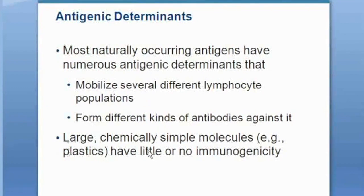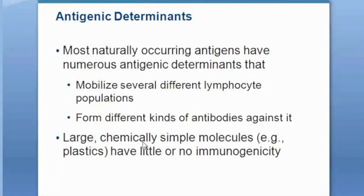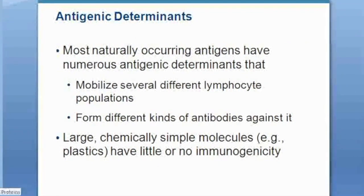If a molecule is made up of repeating similar subunits, like plastics, it commonly does not provoke an immune response. That's why plastics can be used in reconstructive surgery — our body does not attack them, because the molecules are so chemically simple that they don't have ends like antigenic determinants that our cells or antibodies would want to attack.